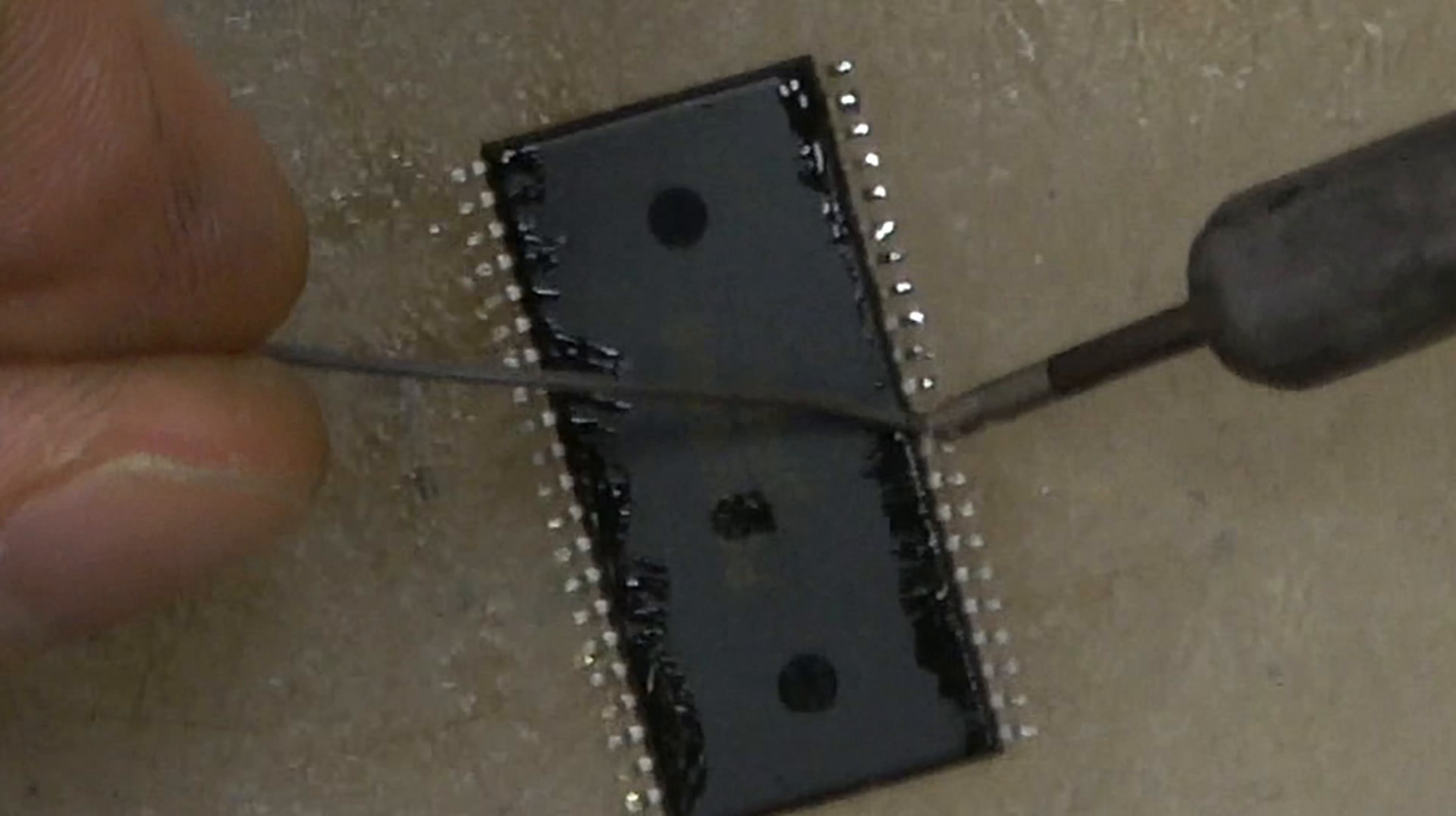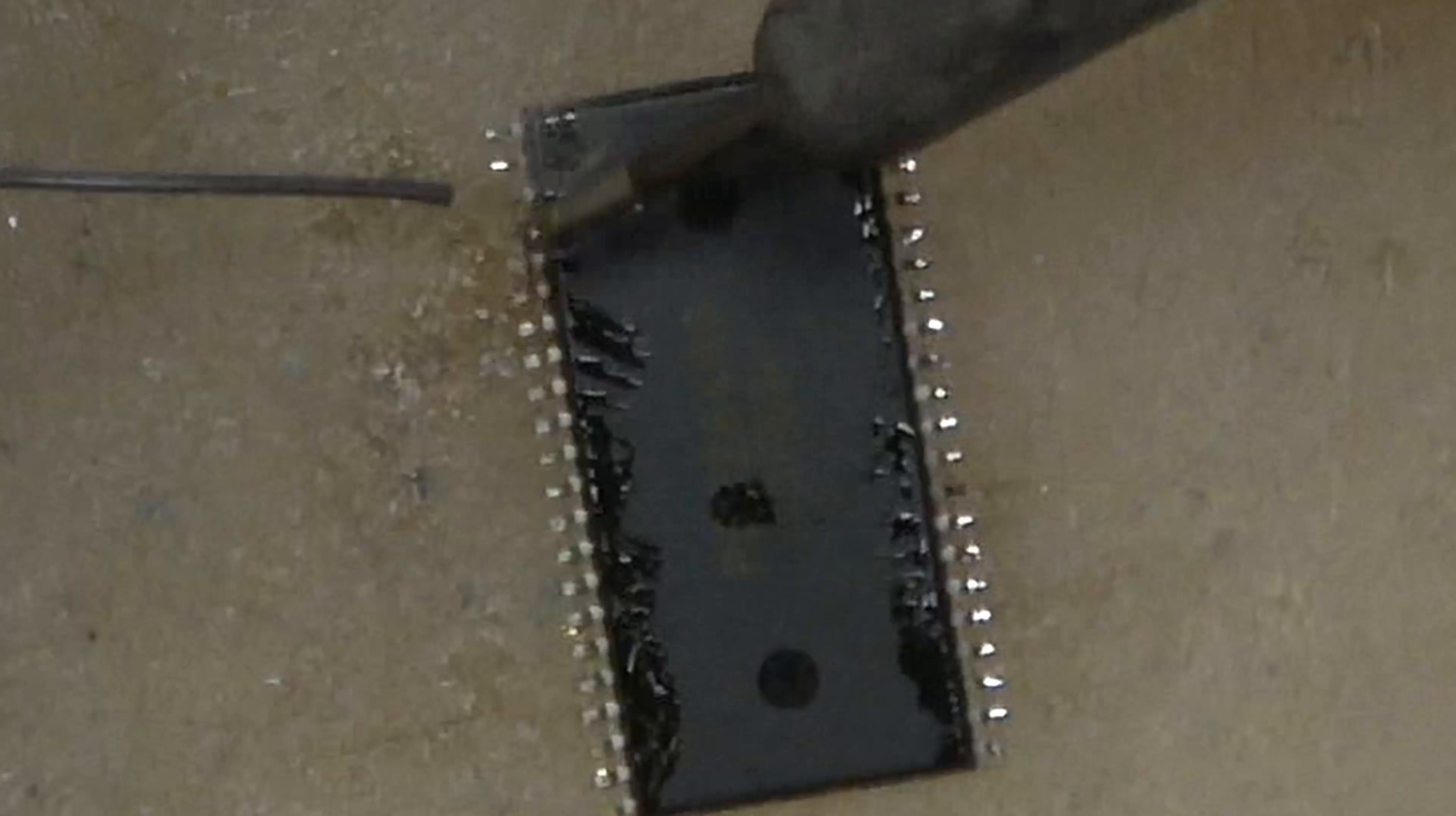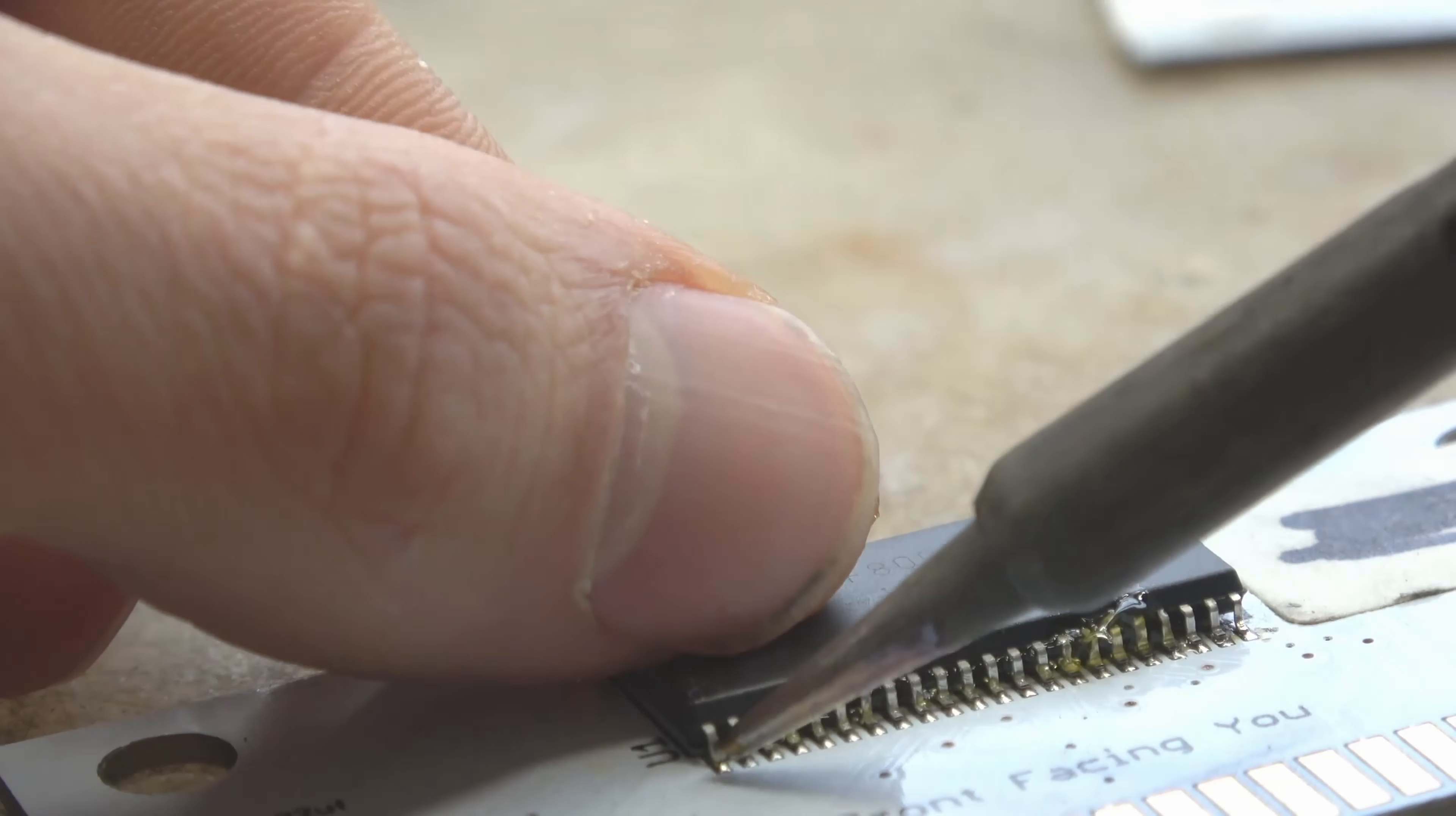If you bridge these connections, just get the tip of the iron in between and wipe away the solder, that's a good way to unbridge the connection. We're just gonna keep going over each point putting a little bit of solder on each one so that when you put the chip in place all you have to do is heat up the pins and push them down.